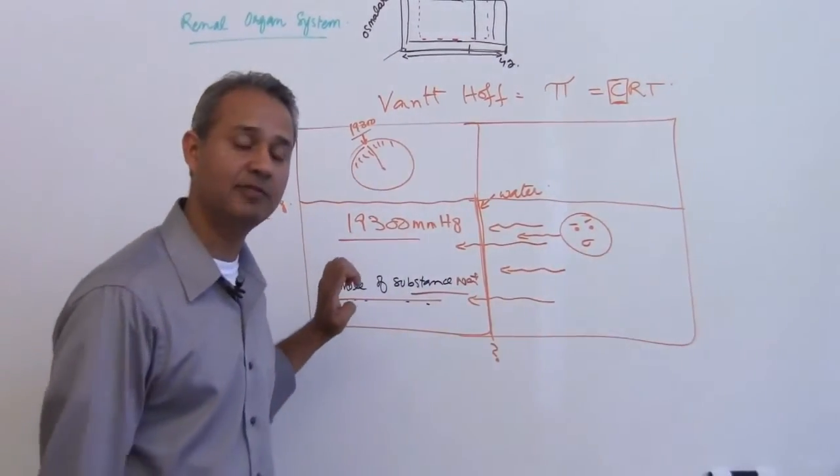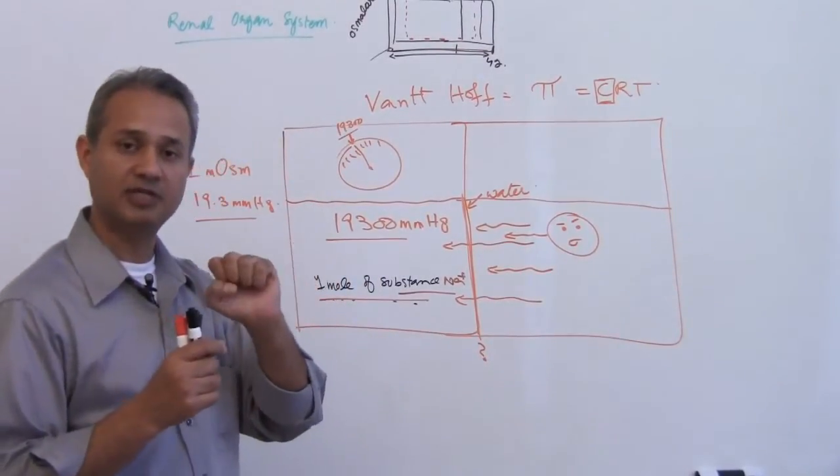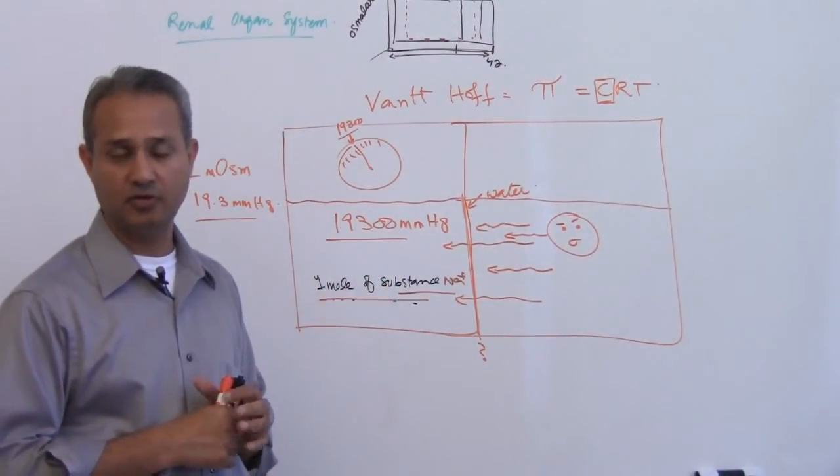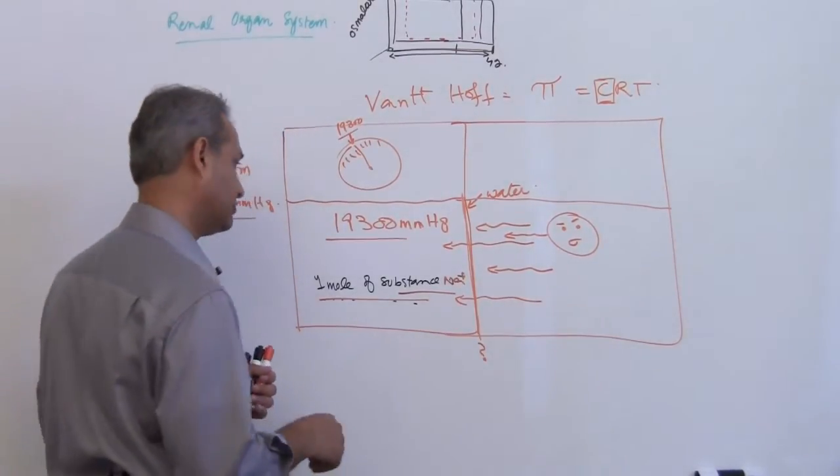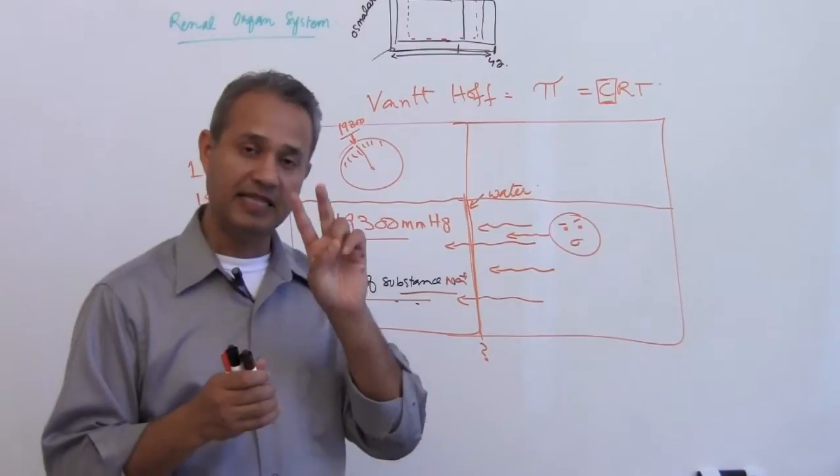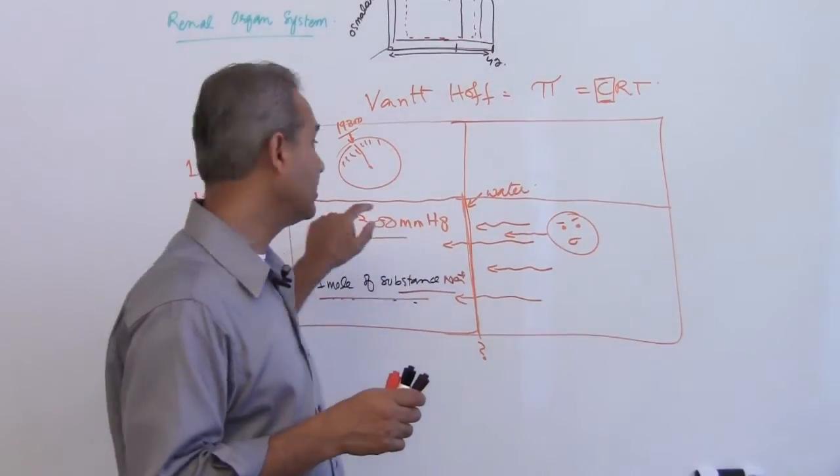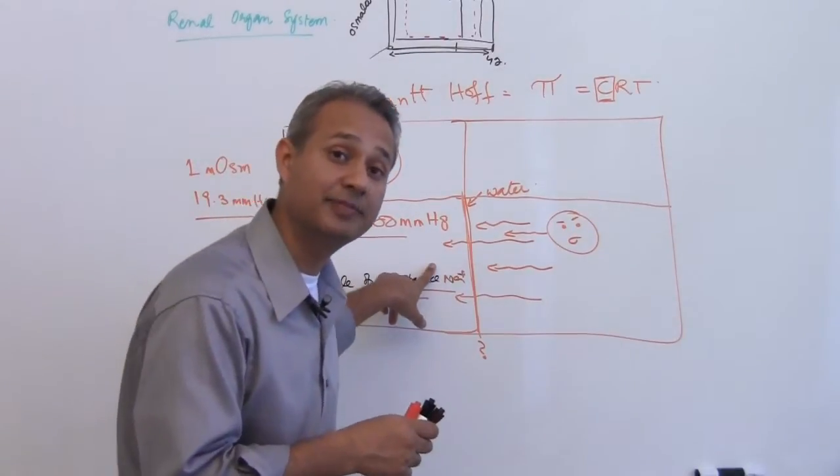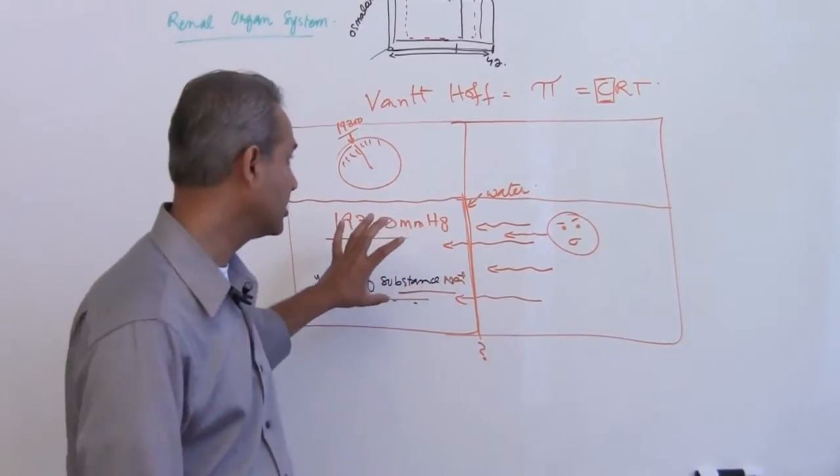People who have been working with elements and chemistry have measured the atomic weights of substances. So sodium 22.9 grams contains one mole of elements or ions. Similarly chloride is 33.5 and so on. One mole when present in water would exert the force of 19,300 millimeter of mercury. That is the osmotic pressure generated due to the presence of a mole of a substance in one liter of water.